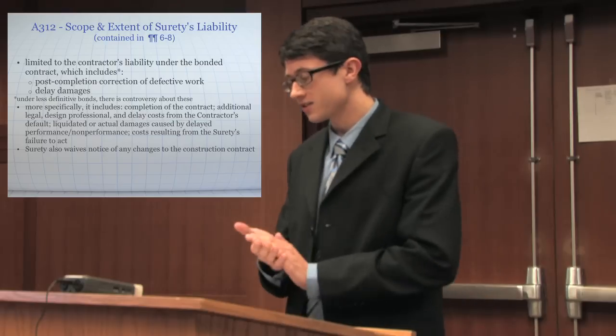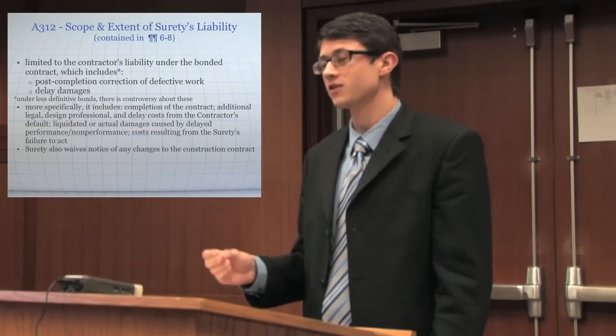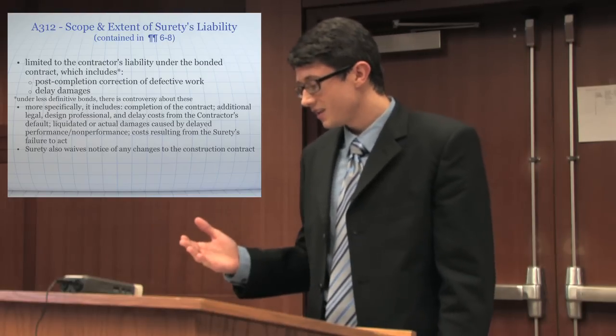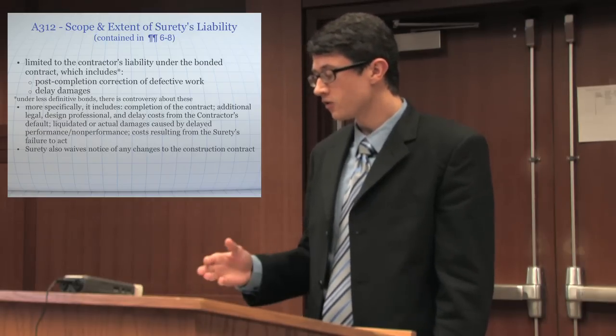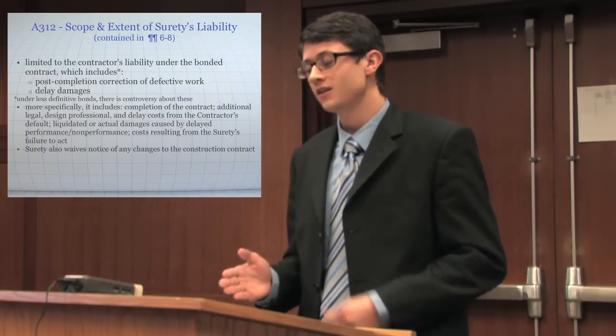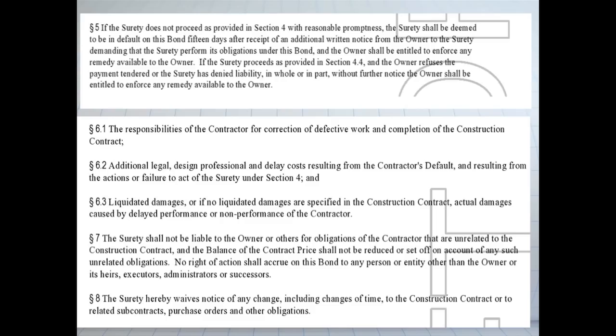Under the A312, the surety is liable for correcting defective work after project completion and any damages caused by delay in completing the project. More specifically, this includes the total cost of completing the contract, as well as costs, legal fees, or cost to design professionals resulting from the contractor's delay. The A312 also makes clear the surety will be liable for liquidated damages — but only if the construction contract includes a provision for them. If there's no such provision, the surety will instead be liable for actual damages caused by the contractor's delay or non-performance. If the surety fails to act within a reasonable time when its performance becomes due, it itself may be held to default, and the owner can assert any available remedies against it.